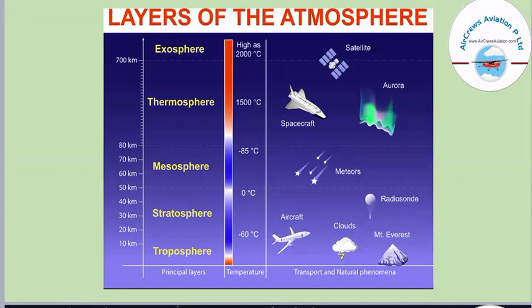In the mesosphere, meteor falls usually occur. If we talk about spacecraft, they usually fly in the thermosphere, and satellites are placed in the exosphere, as high as 700 kilometers from the surface of the Earth.